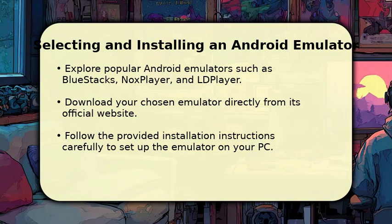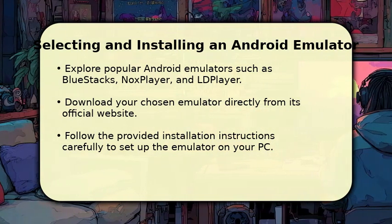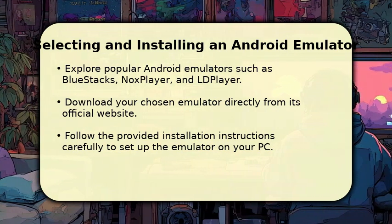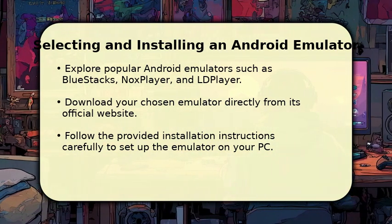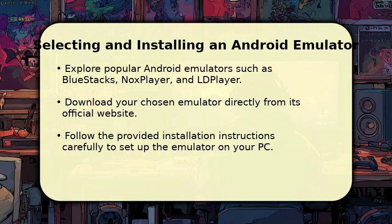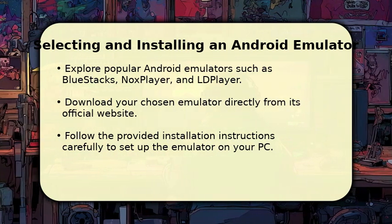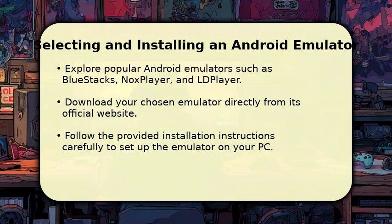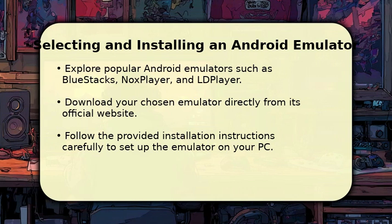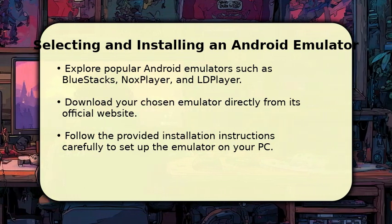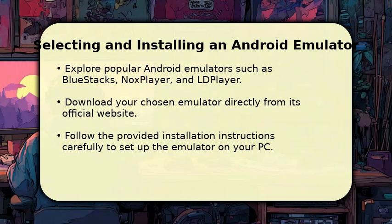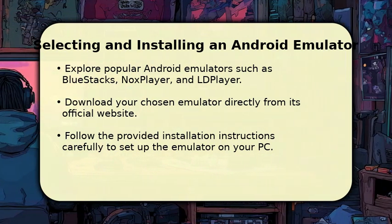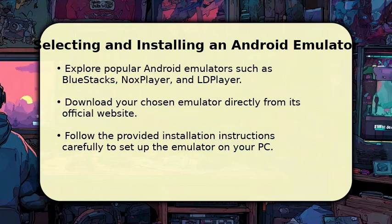Once virtualization is enabled, the next step is to choose and install an Android emulator. There are several excellent options available, such as BlueStacks, Knox Player, and LD Player, each offering a slightly different experience. Visit the official website of your chosen emulator to download the installer. Always download from official sources to ensure security and proper functionality. Follow the on-screen instructions carefully to complete the installation process, and you'll be one step closer to playing Clash Royale on your desktop.